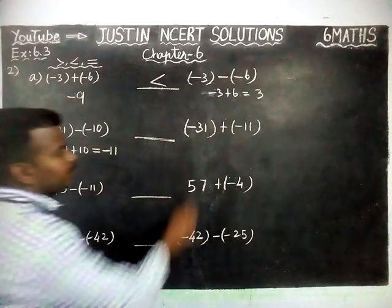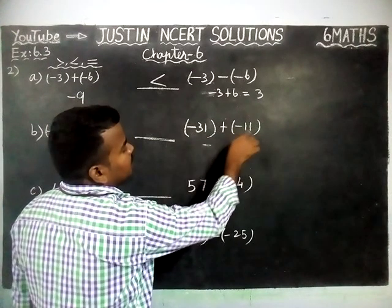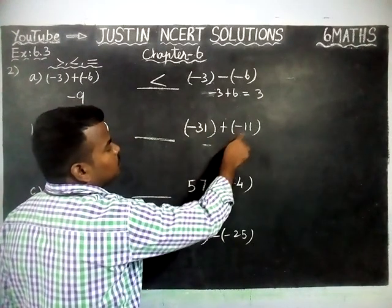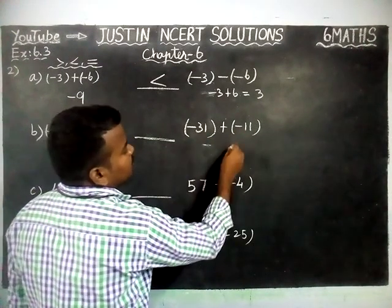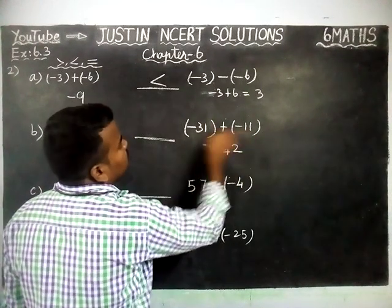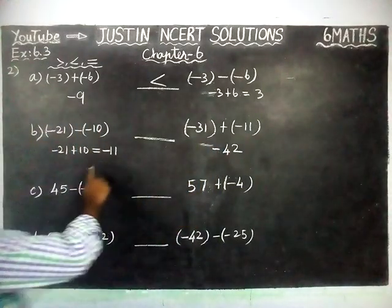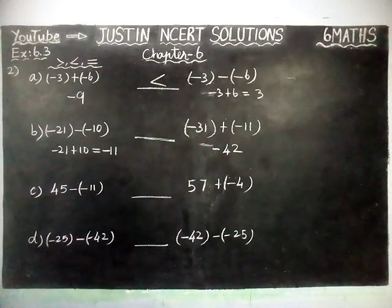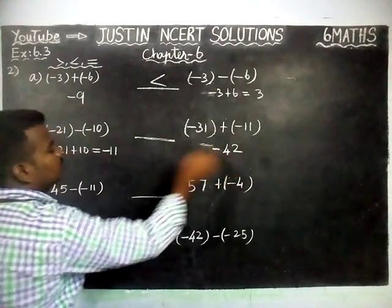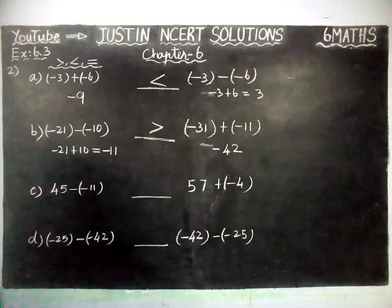Next, right hand side: minus 31, minus 11. Both have the same sign, so we add them. 1 plus 1 is 2, 3 plus 1 is 4, and both also have minus sign, so minus 42. Now comparing: minus 11 versus minus 42. Minus 11 is the greatest number, so we use the greater than symbol.